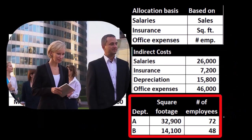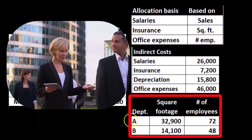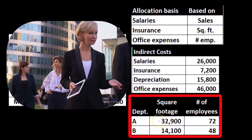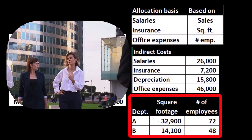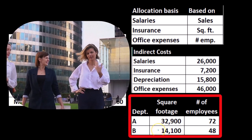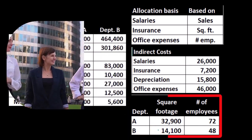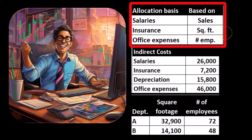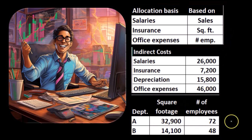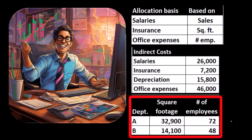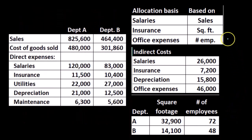The related information: in terms of square footage, department A uses 32,900 square feet and B uses 14,100. We'll need this information when using square footage as an allocation base, as we are for insurance. Number of employees: 72 for A and 48 for B — needed when using employee count as an allocation base, as we're doing with office expenses.